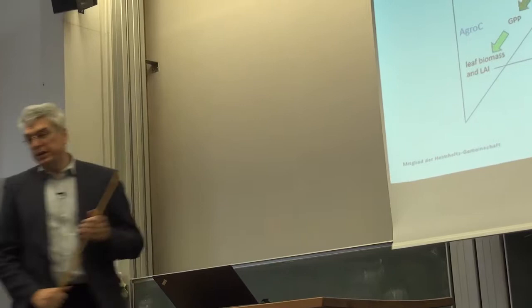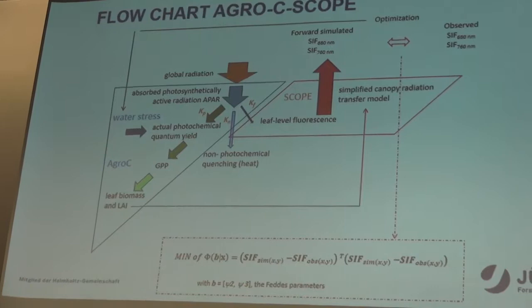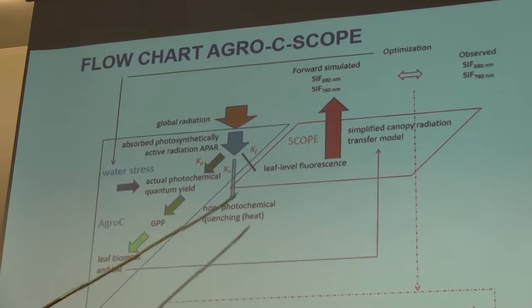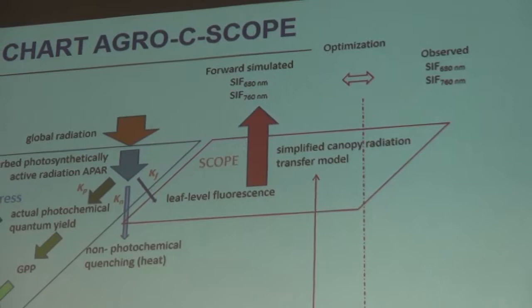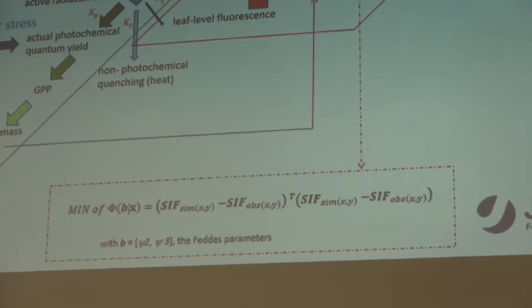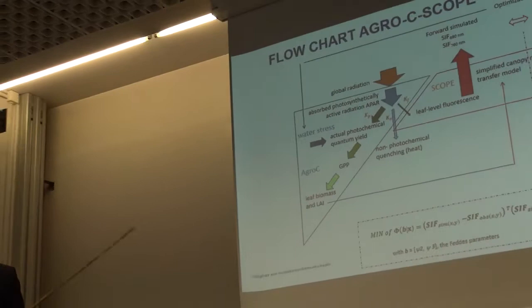The basic idea is: I have a model that calculates in a forward manner the signal observed by the drone. A sensor measures spectral induced fluorescence at the same wavelength. Then you run an optimization, minimizing the difference between what is observed and what is predicted by the model, looking at a set of parameters at a specific location.